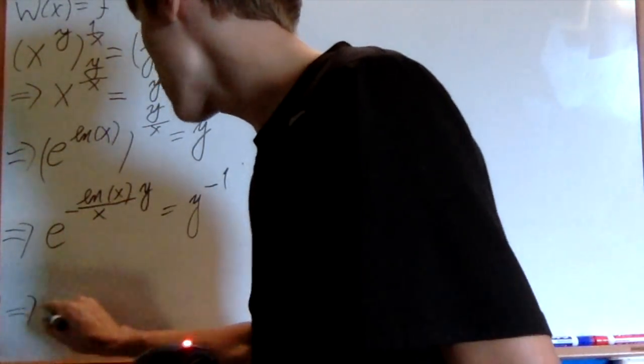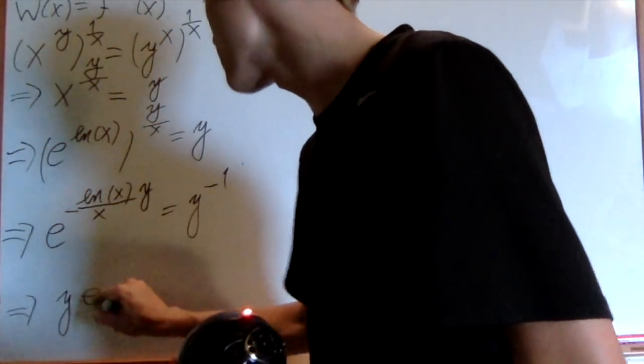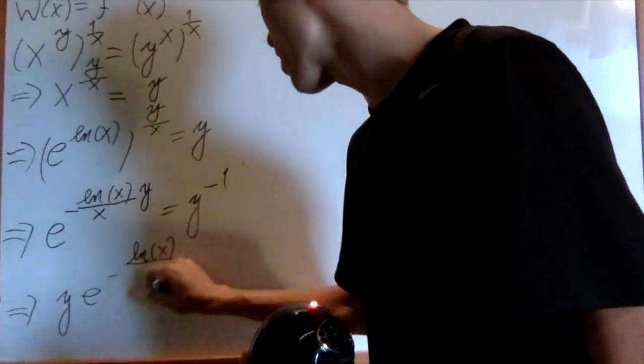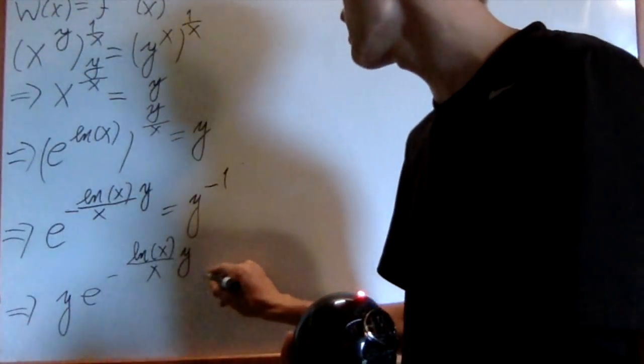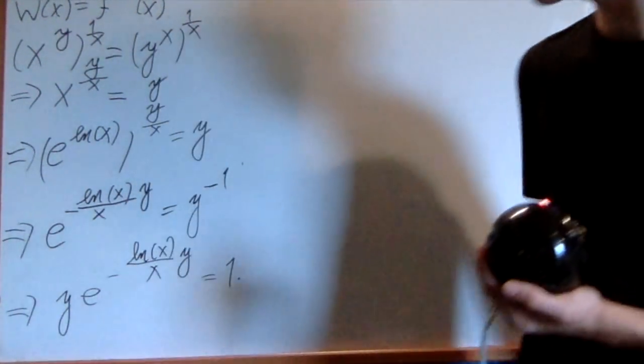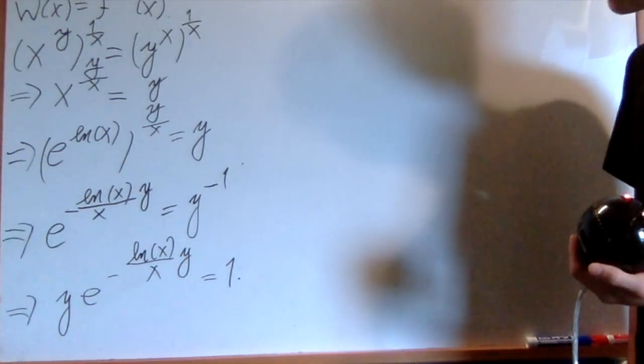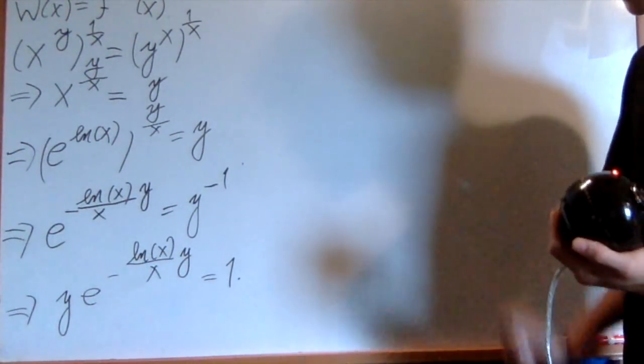And then very easily, I can multiply both sides by y. To get y times e to the negative natural log of x over x, y. And it's equal to 1. So I've sort of abandoned the reasoning that we needed one variable on one side. But you'll see that that'll come back.